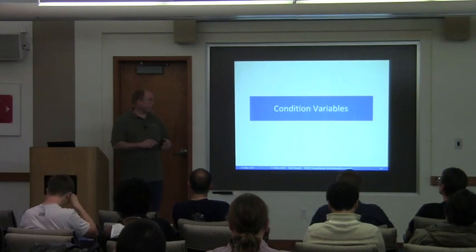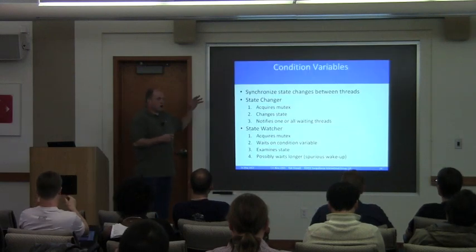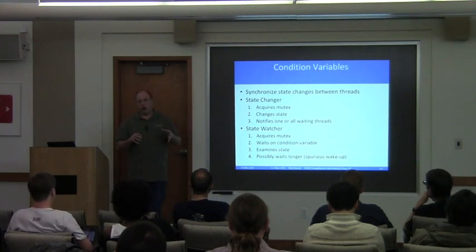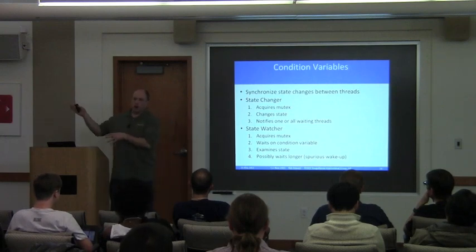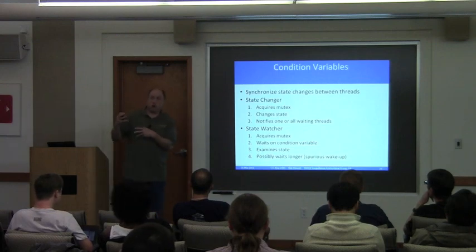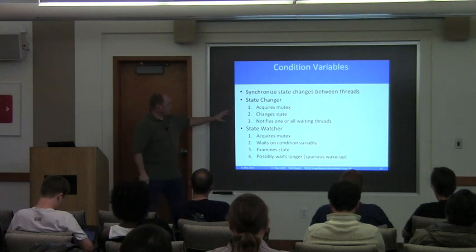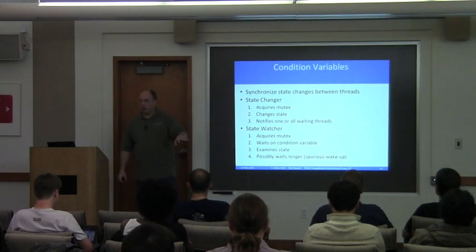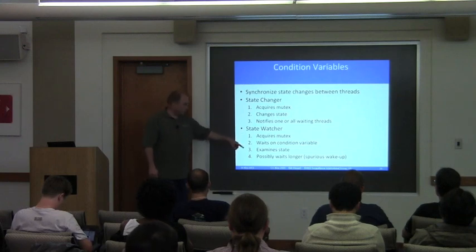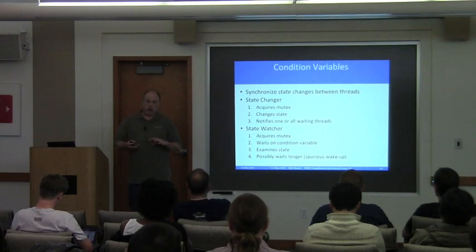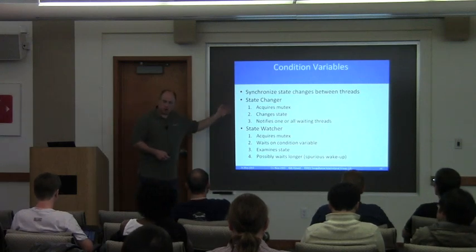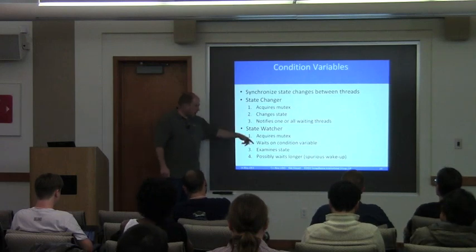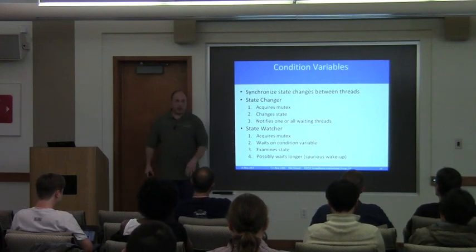Condition variables are for synchronizing state changes between threads. You've got a changer whose job is to say this state is now a new value. Other threads are waiting around to learn when that state changes. The changer grabs a mutex, changes the state, then notifies one waiter or multiple waiters. The state watcher grabs the same mutex and waits on the condition variable, which releases the mutex while waiting so the changer actually gets a chance to change the state. When notified, it wakes up, checks the state, and decides what to do.